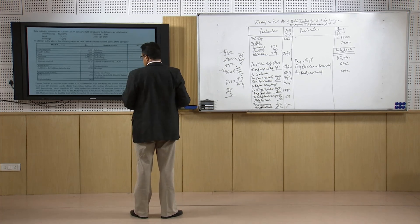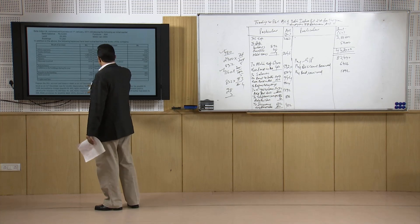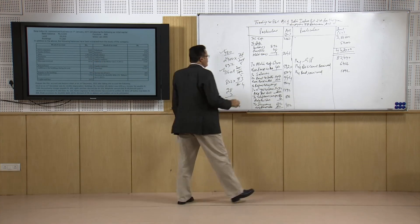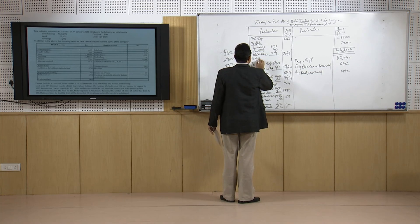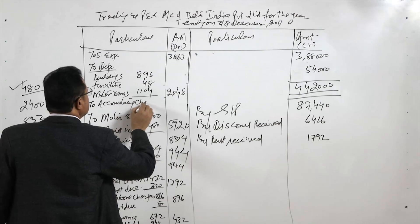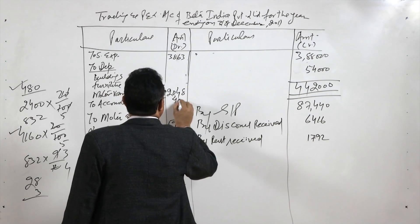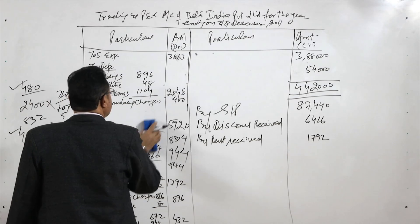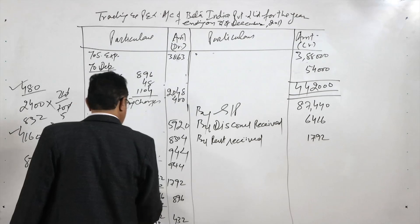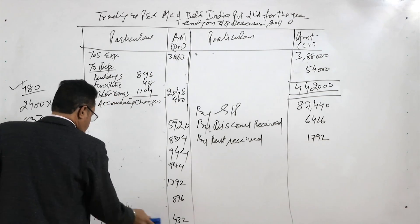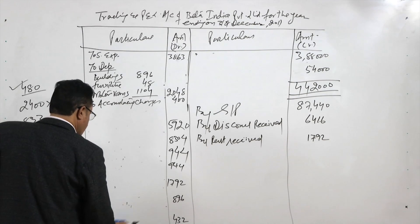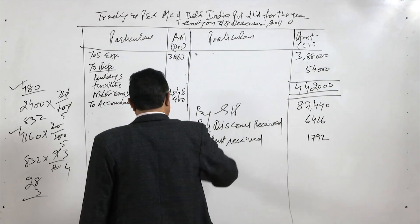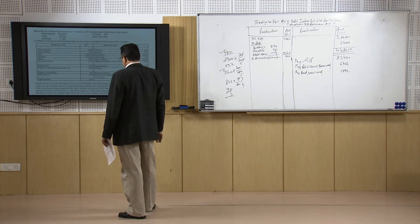Now we talk about the next part. We have taken closing stock and adjusted depreciation. Income tax we will take later. The accountancy charges are payable — 400 rupees. One effect will come in the profit and loss account and the second effect will come in the balance sheet.